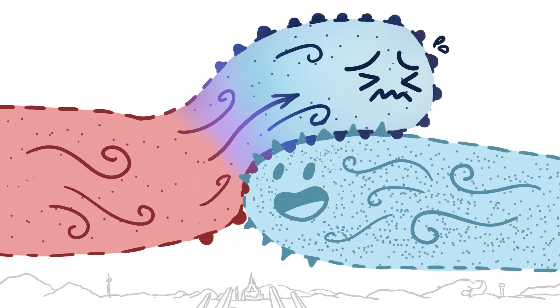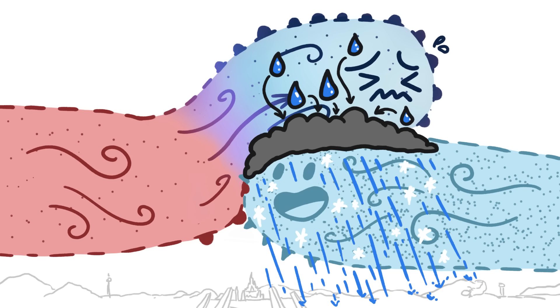As it rises, it quickly cools off, which causes tons of water vapor in it to condense right where the two air masses meet, and then fall as rain, or snow, or sleet.